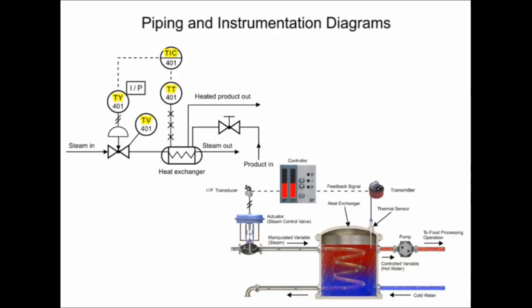In the top portion of the symbols is the functional identifier, and the first letter denotes the measured variable. The first letter of each functional identifier is the letter T, which defines the process of temperature control.